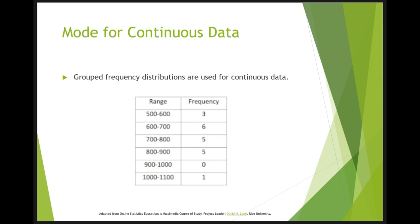With continuous data measured to many decimal places, the frequency of each value is typically one, since the same score is rarely obtained more than once. For example, if you measure the time it took to make a response to a stimulus, no two times would be exactly the same.